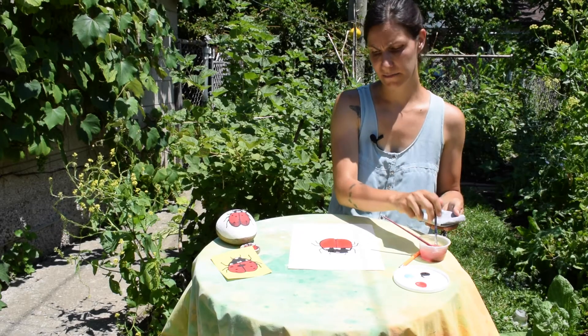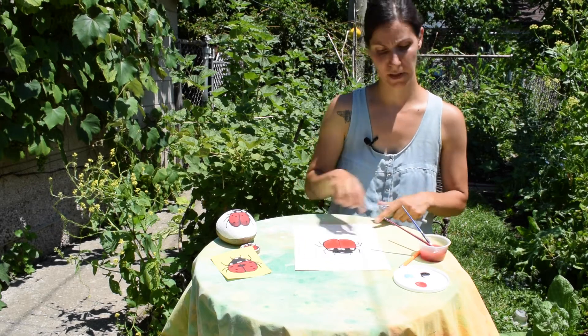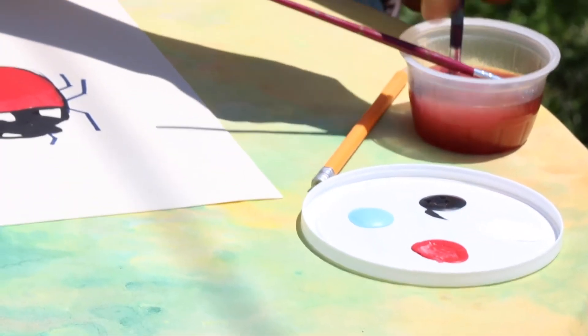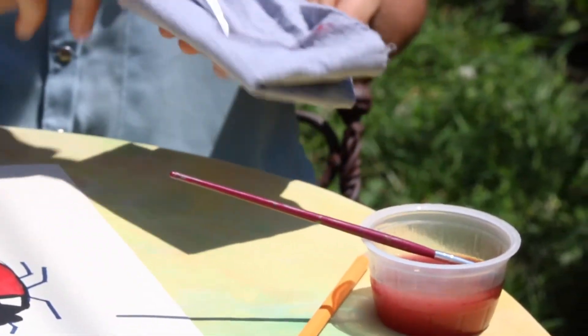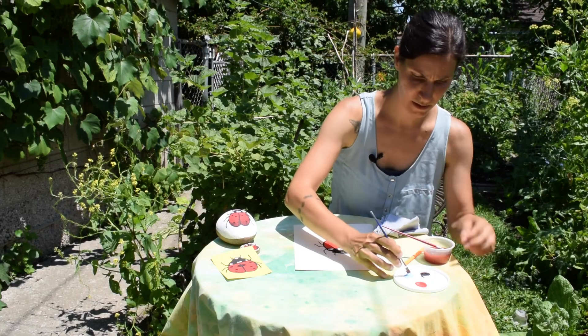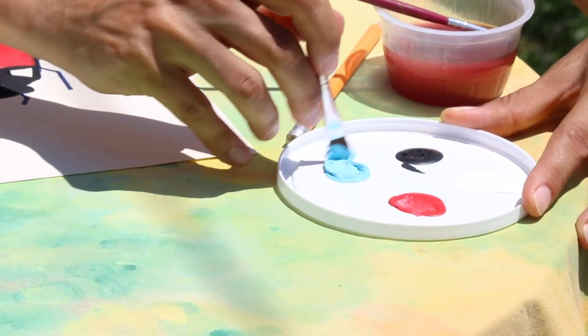All right, so my next step I'm going to paint the background blue. So I make sure I get all the red off my paintbrush. I dip in my blue paint. It's drying in the sun already.